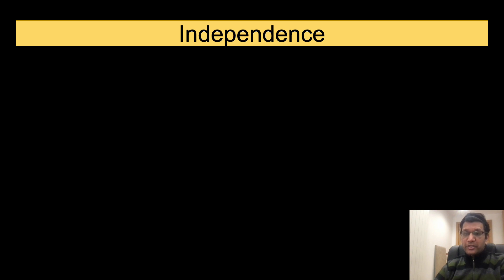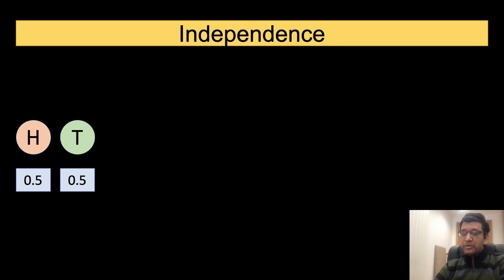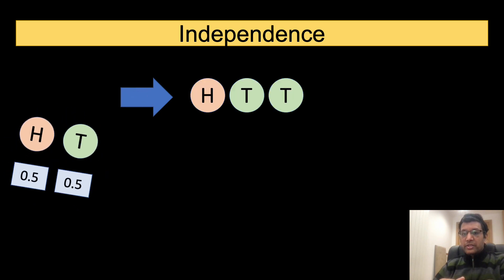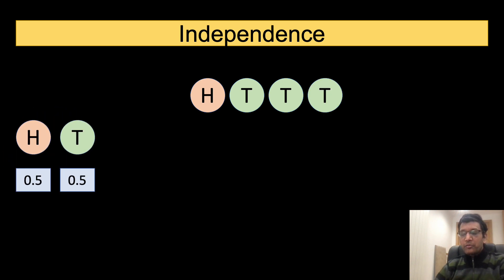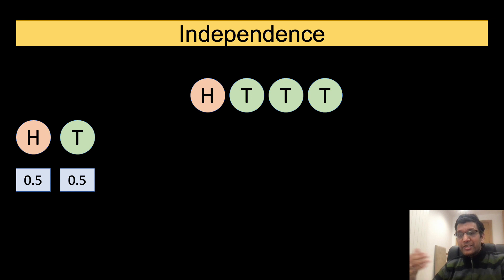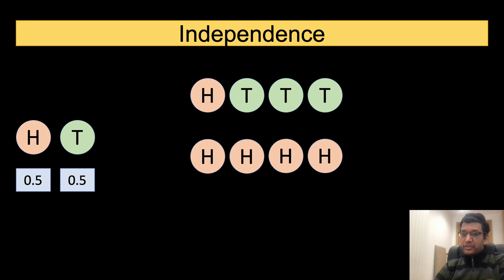Consider a fair coin such that the probability of heads is 0.5. We perform four coin tosses resulting in a sequence of head, tail, tail, and another tail. It must be obvious that despite observing tails in the second and third tosses, the probability of heads is still 0.5 in the fourth toss. So observing a whole sequence of tails does not imply that the probability of heads will increase in the subsequent toss.